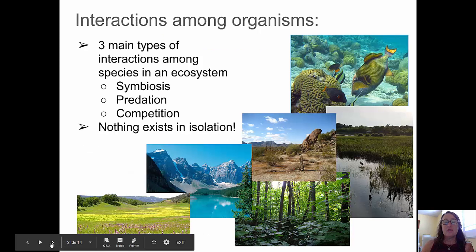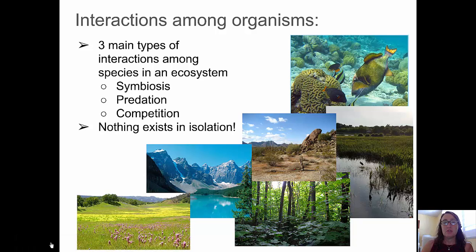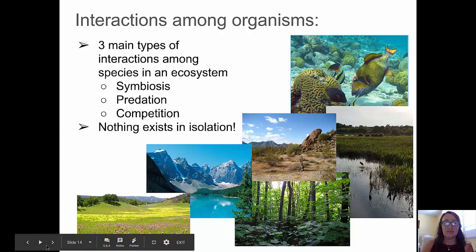First of all, let's talk about the three main types of interactions among species in an ecosystem. They include symbiosis, predation, and competition. Remember, nothing exists in isolation.